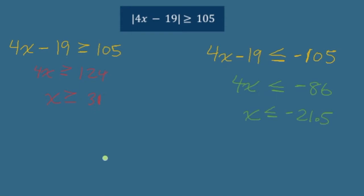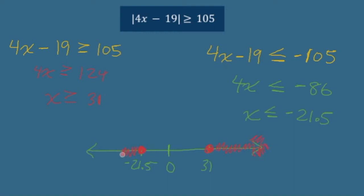We're allowed to be either larger than 105 or less than negative 105. We've got 31 here and negative 21.5 there. We're allowed to equal 31, we're allowed to equal negative 21.5, we're allowed to be bigger than 31, and we're allowed to be smaller than negative 21.5. When you have a greater-than situation, this is how your number line is going to end up — as long as we keep our numbers outside of a certain zone, we make that inequality true.